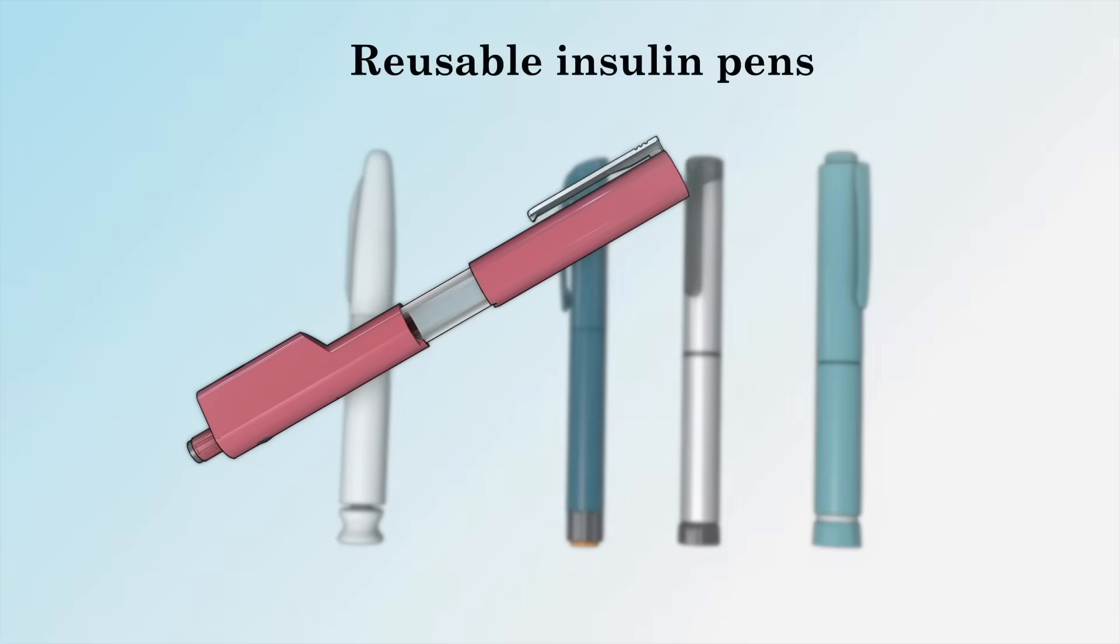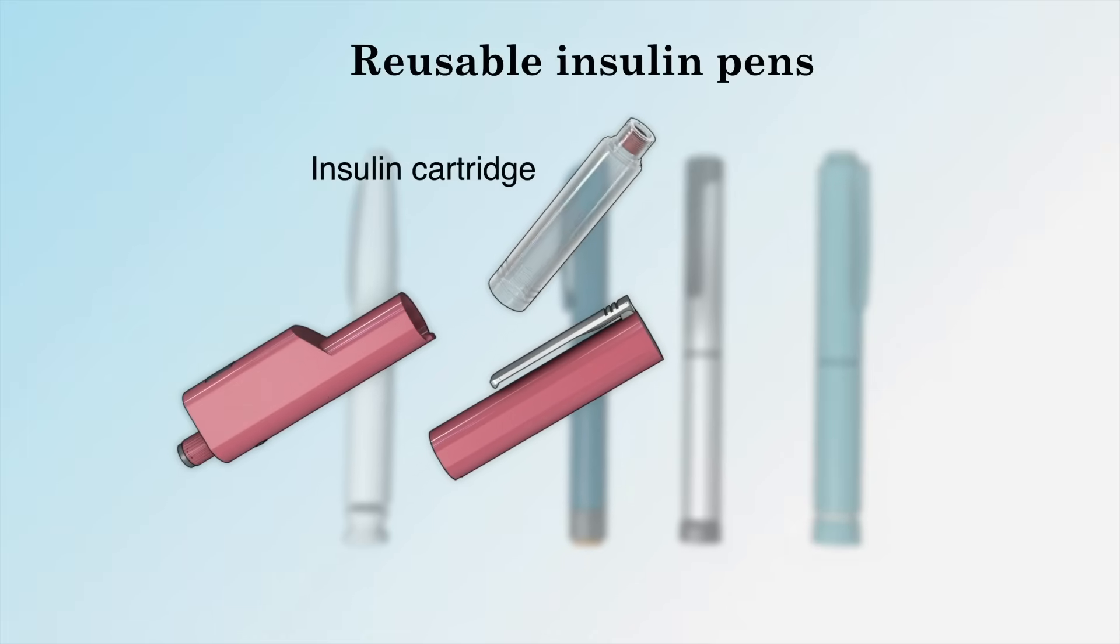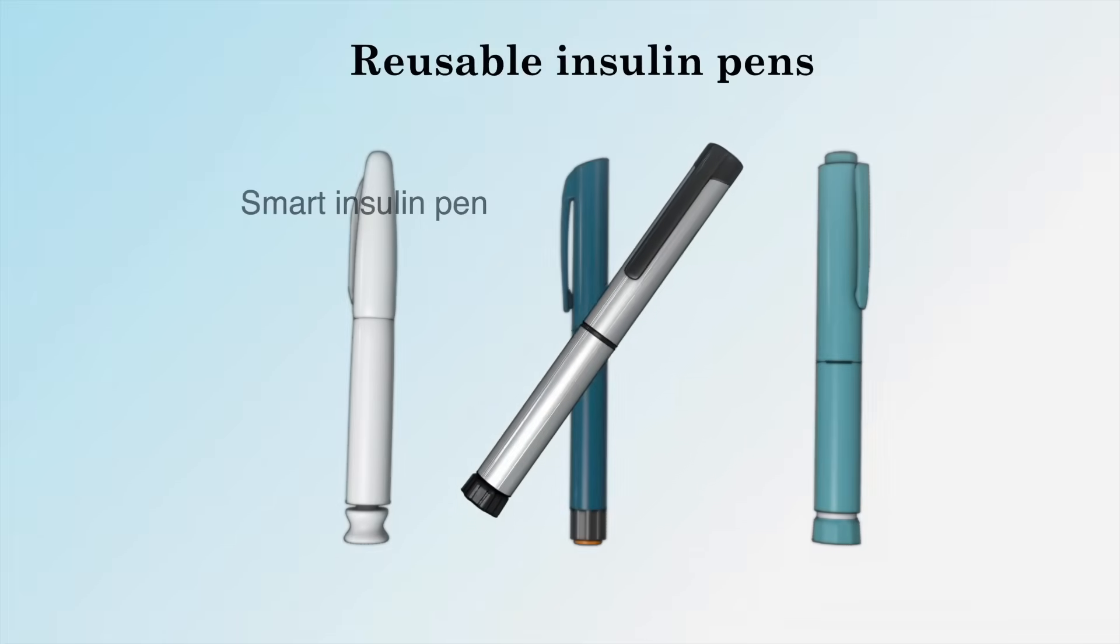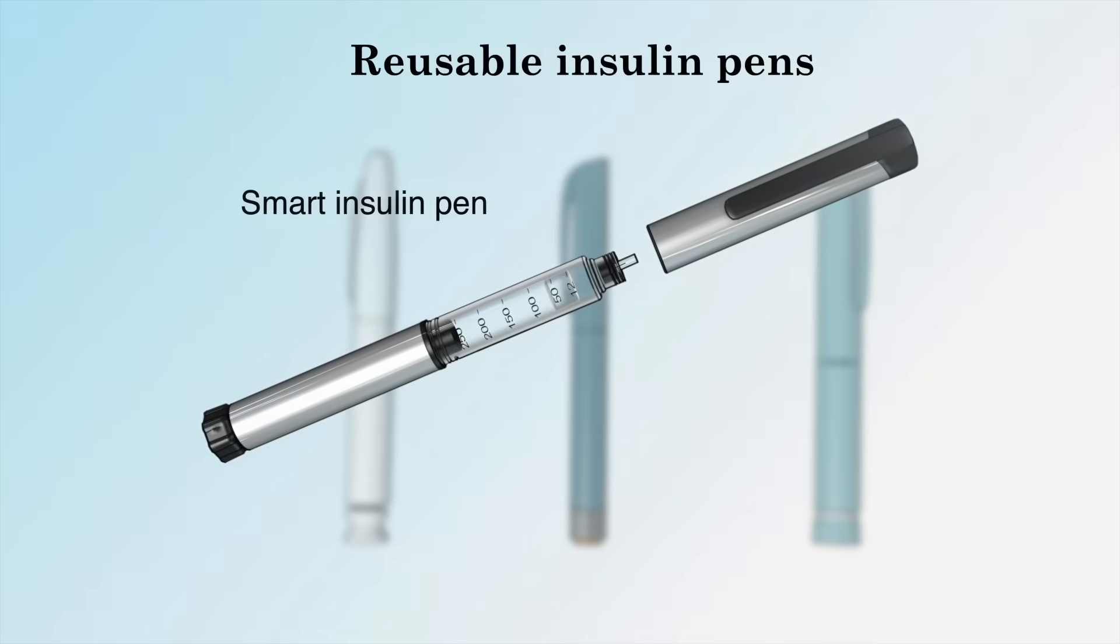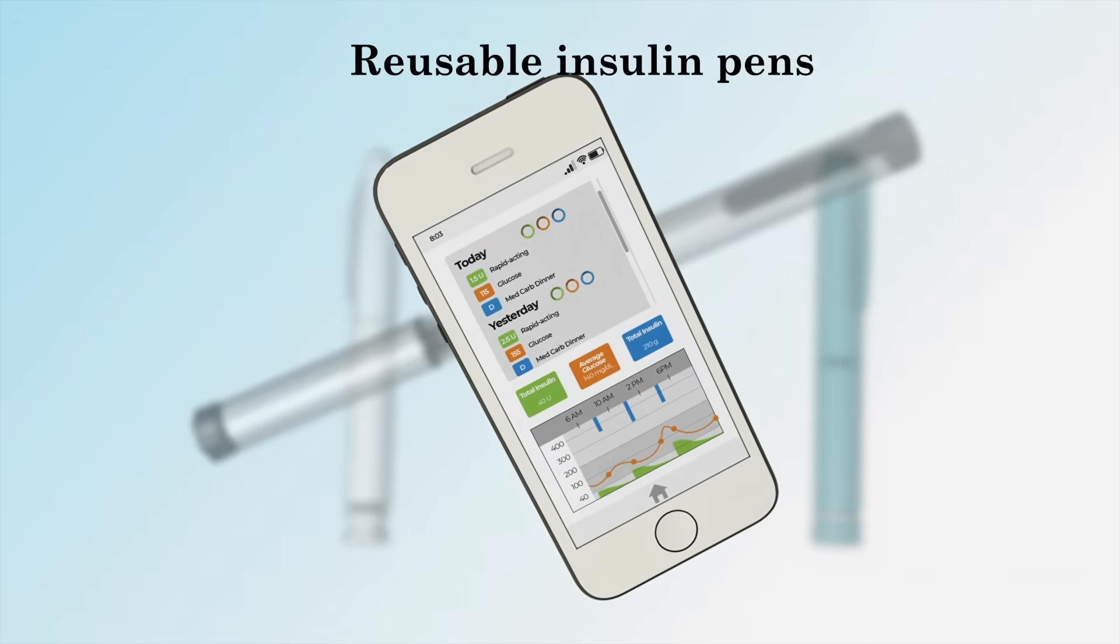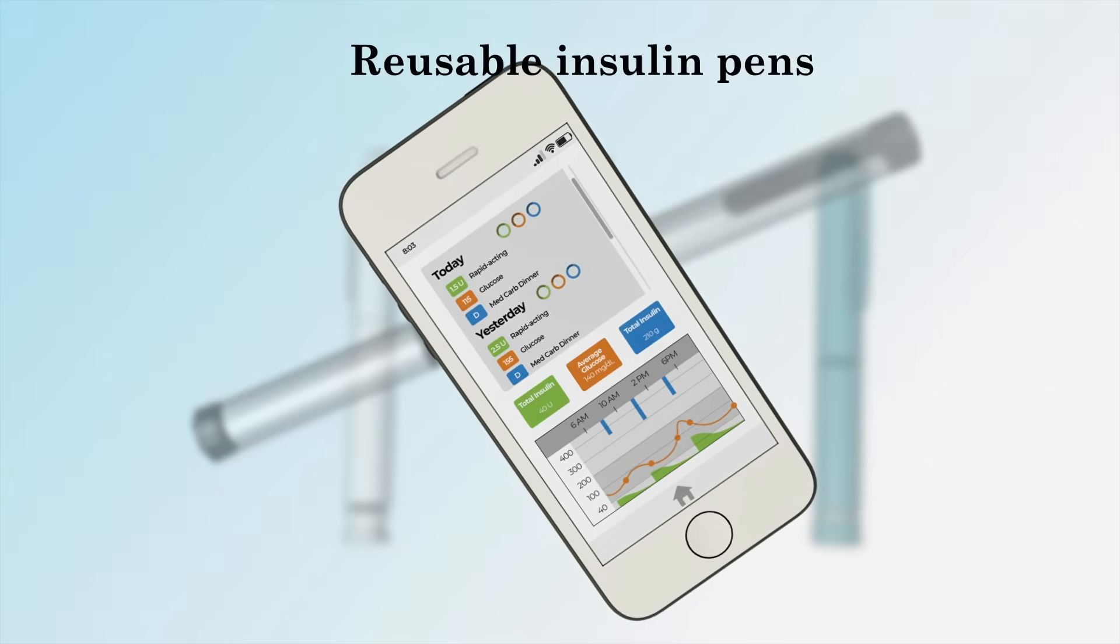Other pens are reusable and come with an insulin cartridge that you load into the pen before using it. One type of reusable pen called a smart insulin pen can help you manage insulin delivery. Smart insulin pens work with an app on your smartphone that can calculate and track your doses and send you alerts, reminders, and reports.